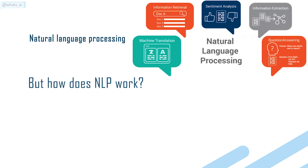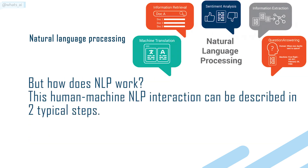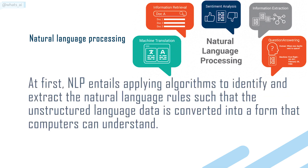But how does NLP work? This human-machine NLP interaction can be described in two typical steps. At first, NLP entails applying algorithms to identify and extract the natural language rules such that the unstructured language data is converted into a form that computers can understand.